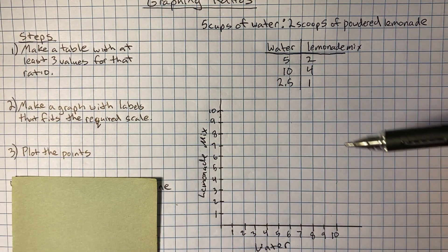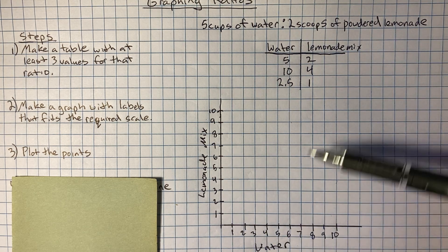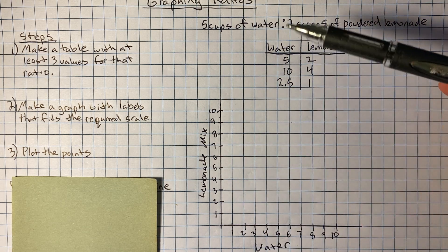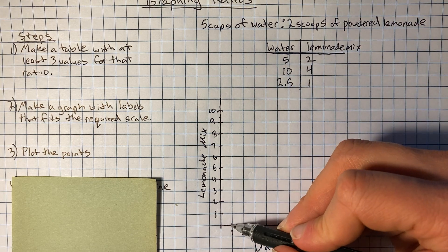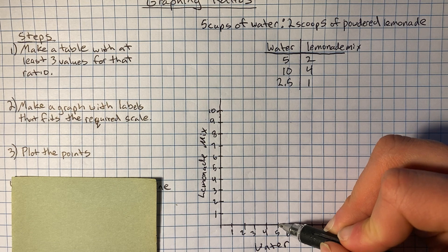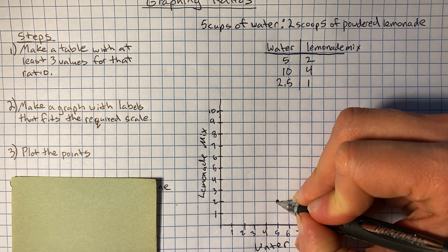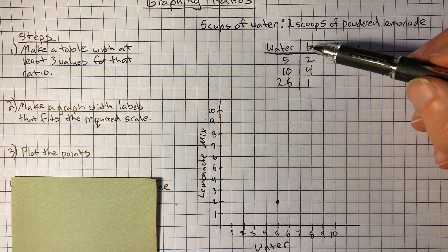I want to plot those points. So since water is right here, that's my x-axis. Lemonade is my y, that's my y-axis. So I'm going to put a point at 5, 2. So I'm going to go over 1, 2, 3, 4, 5. Water is 2, lemonade mix.